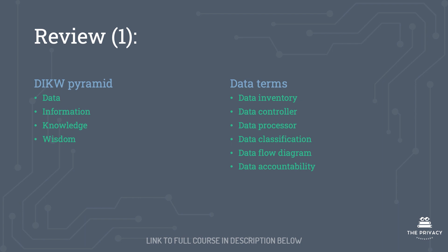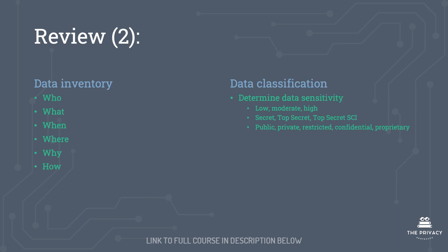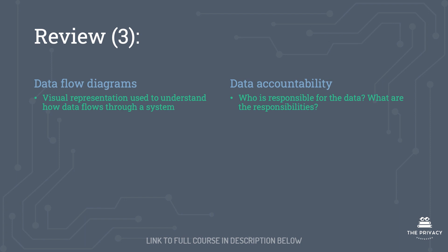In this lecture we discussed data inventory. We started by looking at the data, information, knowledge, wisdom (DIKW) pyramid. We then went over key terms including data inventory, data controller, data processor, data classification, data flow diagram, and data accountability. For data inventory, remember the who, what, when, where, why, and how. For data classification, know the different models: low/moderate/high; secret/top secret/TS-SCI; and public/private/restricted/confidential/proprietary. A data flow diagram (DFD) is a visual representation used to understand how data flows through a system. And data accountability addresses who is responsible for the data and what their responsibilities are.